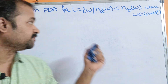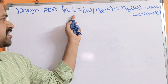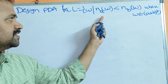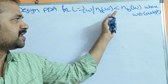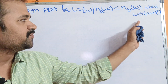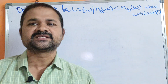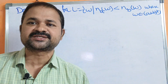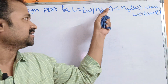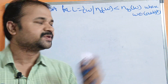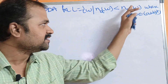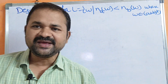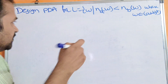Now, let's see this example. Design a PDA for the language L equal to W such that Na of W is less than Nb of W, where W belongs to A plus B star. Na of W means the number of A's in the string W must be less than the number of B's in the string W. W means a combination of A's and B's.